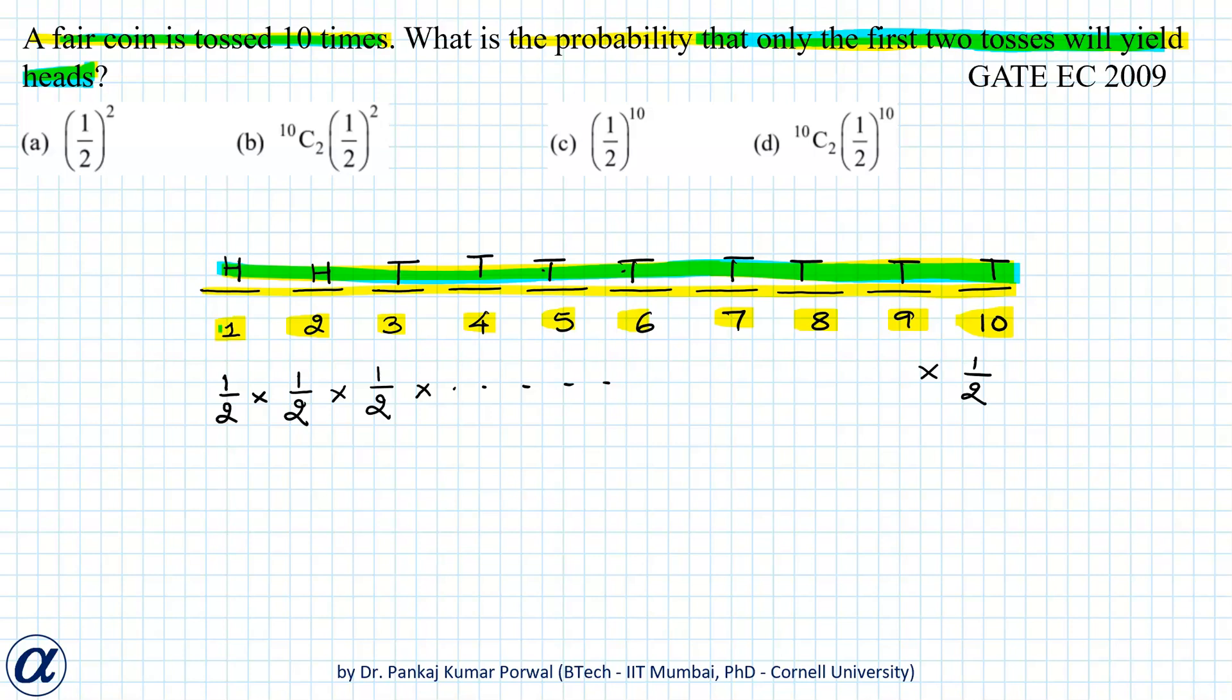Here note that we have in total 10 tosses, so there will be 1/2 multiplied 10 times. So this will equal 1/2 to the power 10. So our option C is correct.